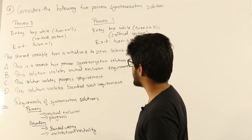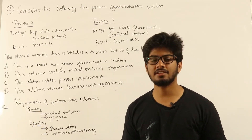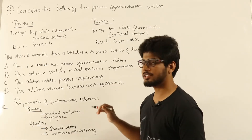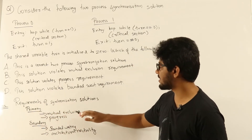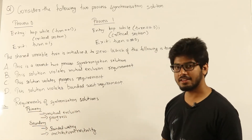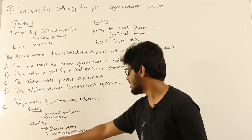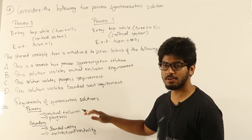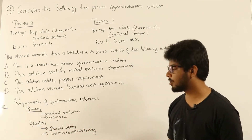This is a question from the operating system section regarding process synchronization. While designing process synchronization solutions, it has to satisfy two primary goals: one, it should satisfy mutual exclusion, and two, it should satisfy progress. It can also satisfy secondary requirements — that is, bounded waiting and architectural neutrality. These two primary conditions must be satisfied, otherwise it is not a valid solution.